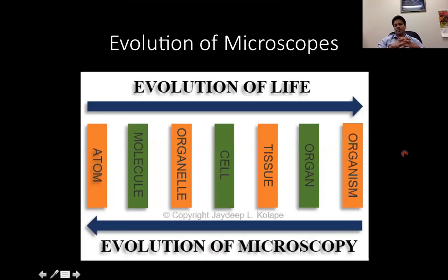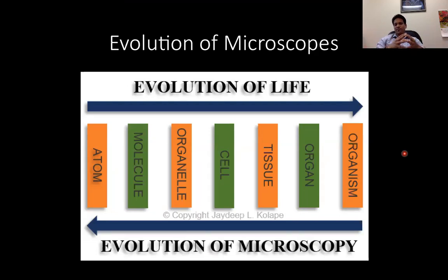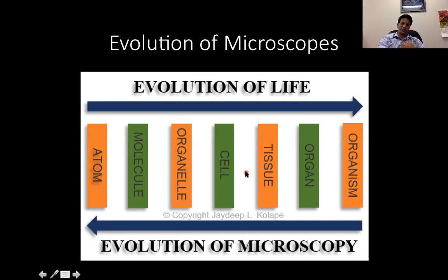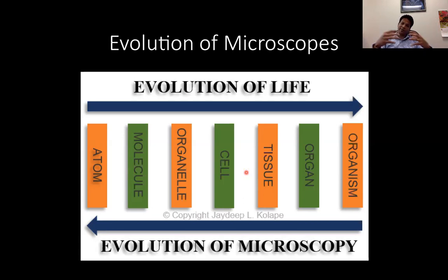The evolution of microscopy is exactly opposite to that of the evolution of life. Evolution of life started from the very basic units of life and went all the way to complex organisms. Similarly, microscopy initially looked at organisms, and now we can go as detailed as the nanoparticle level or even the atomic level to see structures. Just as we are evolving, microscopy is also evolving, and there are several different types of microscopes and techniques now available for different research purposes.